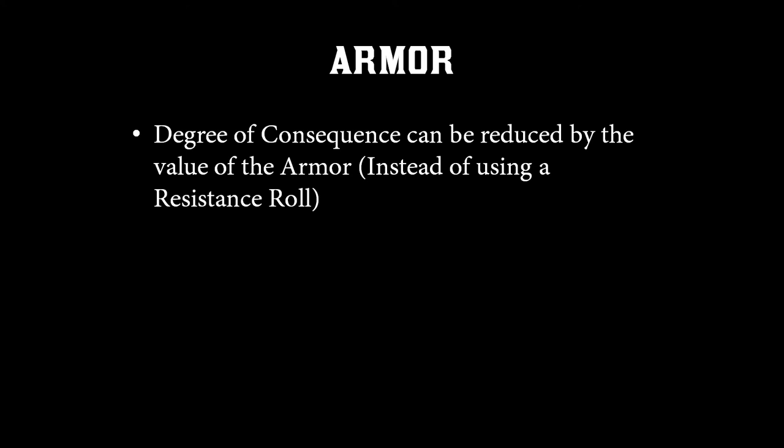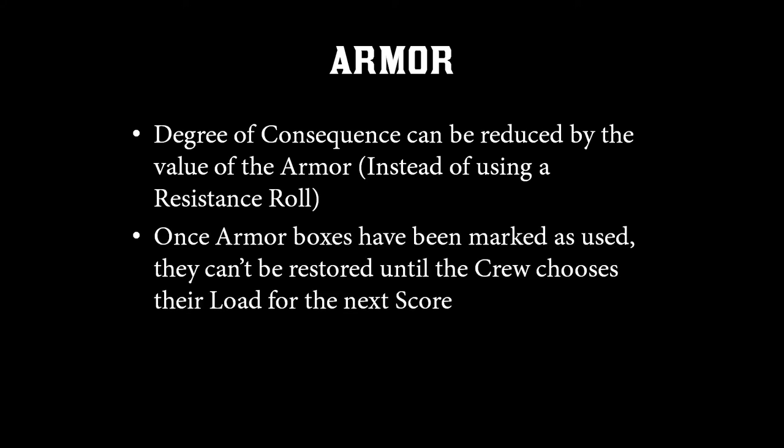Moving on to armor: like with the resistance roll, the degree of a consequence can be reduced by the value of armor — as long as it makes sense in the fiction. So if you're taking two degrees of harm and have armor with a value of two, you can check off both armor boxes to negate that harm without making any resistance roll, incurring no stress. Once armor boxes have been marked as used, they can't be restored until the crew chooses their load for the next score, at which point your items and armor are refreshed.